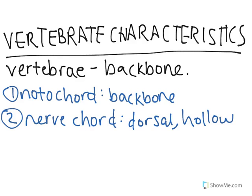Some main characteristics about the nerve cord: it's dorsal and hollow. Dorsal just means on your back, and hollow just means that it's not filled with anything. So that nerve cord in a human becomes a brain and a spinal cord, allowing you to sense things throughout your body and have a complete connection between your whole nervous system.